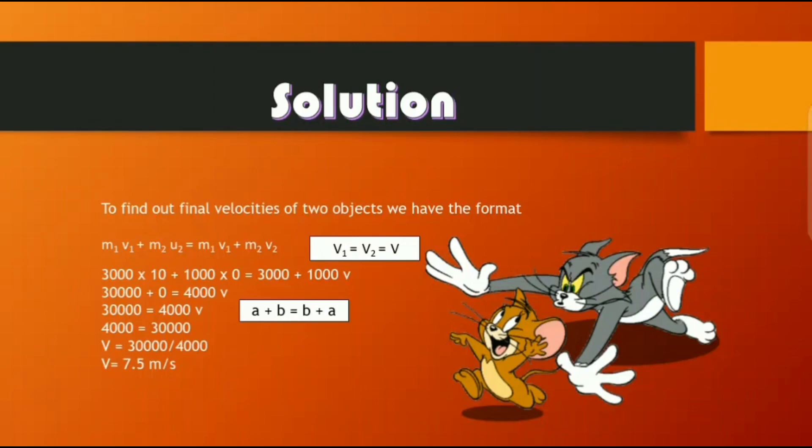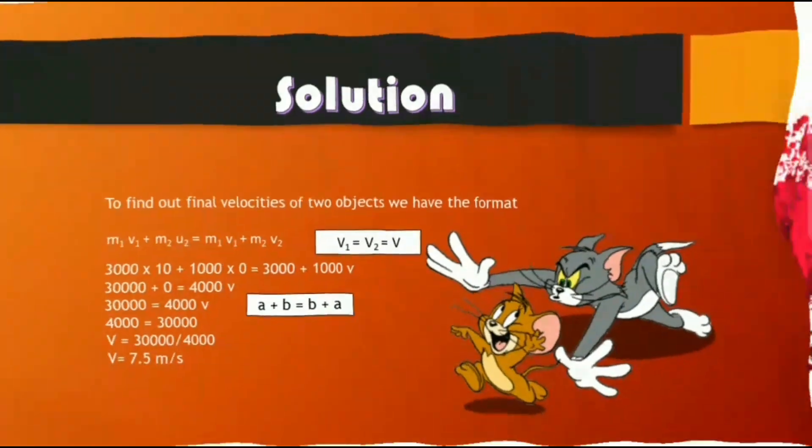To find out velocities of two objects, we have the format m1 v1 plus m2 u2 equals m1 v1 plus m2 v2. After substituting and simplifying the values, we will get the final answer as v equals 7.5 meter per second. Thank you.